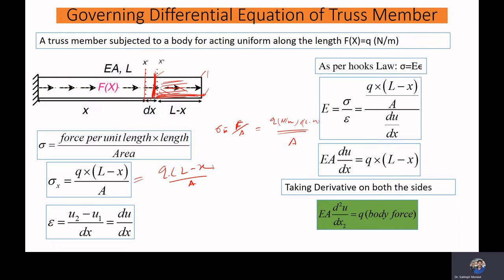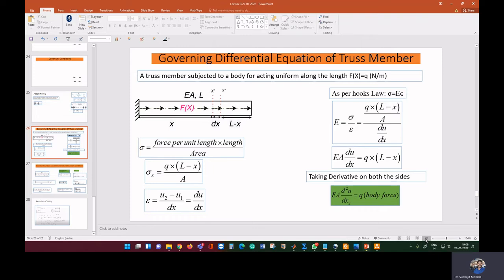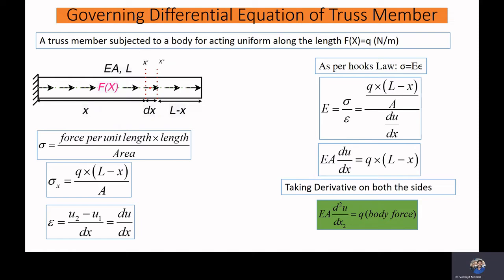We are considering a very small strip and calculating the stress at that location. For the strain, we see how much the length changes. If a point was initially at position u₁ and moves to u₂ due to the force, then the strain is (u₂ - u₁) divided by the original length of the strip — that is, strain equals change in length by original length.